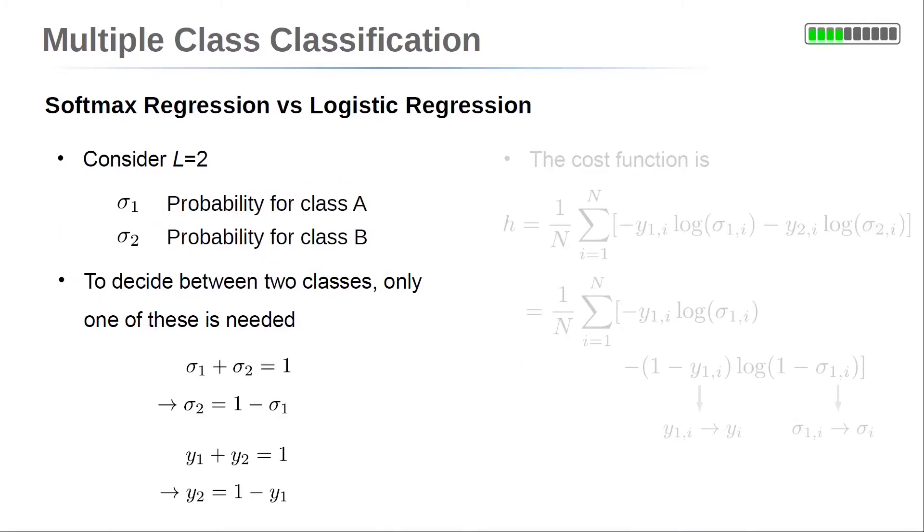Next, we take a look at the cost function. Analogous to the probabilities σ_1 and σ_2, the true values for y_1 and y_2 can be reduced to a single variable.